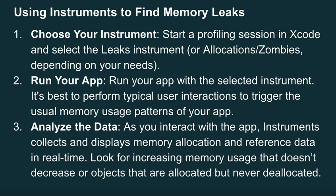Using Instruments to find memory leaks: first, choose your instrument — start a profiling session in Xcode and select the Leaks, Allocations, or Zombies instrument depending on your needs. Run your app with the selected instrument. It's best to perform typical user interactions to trigger the usual memory usage patterns of your app. As you interact with the app, instruments collects and displays memory allocation and reference data in real time. Look for increasing memory usage that doesn't decrease, or objects that are allocated but never deallocated.